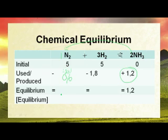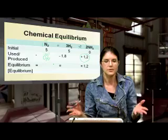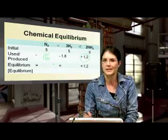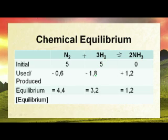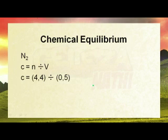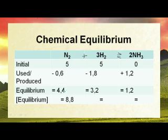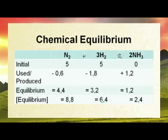Now we calculate equilibrium moles. For nitrogen: 5 − 0.6 = 4.4 mol. For hydrogen: 5 − 1.8 = 3.2 mol. For ammonia: started with 0, produced 1.2, so equilibrium is 1.2 mol. Then convert the volume: 500 cm³ ÷ 1000 = 0.5 dm³. Concentrations are: N₂ = 4.4 ÷ 0.5 = 8.8 mol/dm³; H₂ = 3.2 ÷ 0.5 = 6.4 mol/dm³; NH₃ = 1.2 ÷ 0.5 = 2.4 mol/dm³.